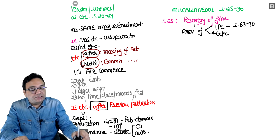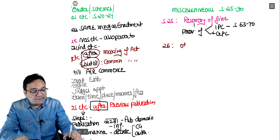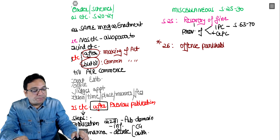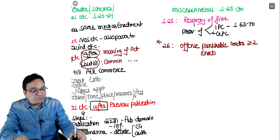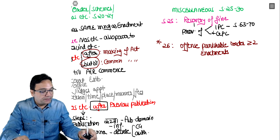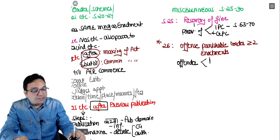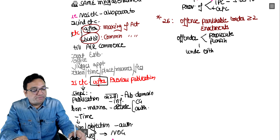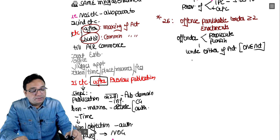Section 26 is a good section. An offense is punishable under two or more enactments - so should one crime get two punishments? Not at all. So the offender shall be prosecuted and punished under either of the acts - simply, only one punishment for one crime, not twice.